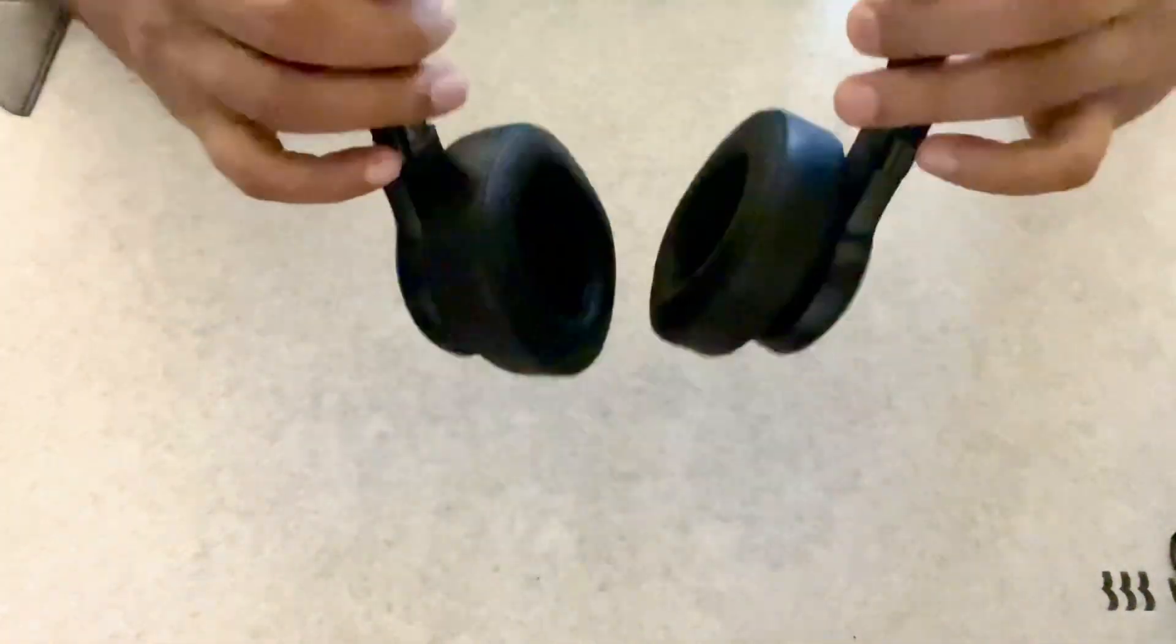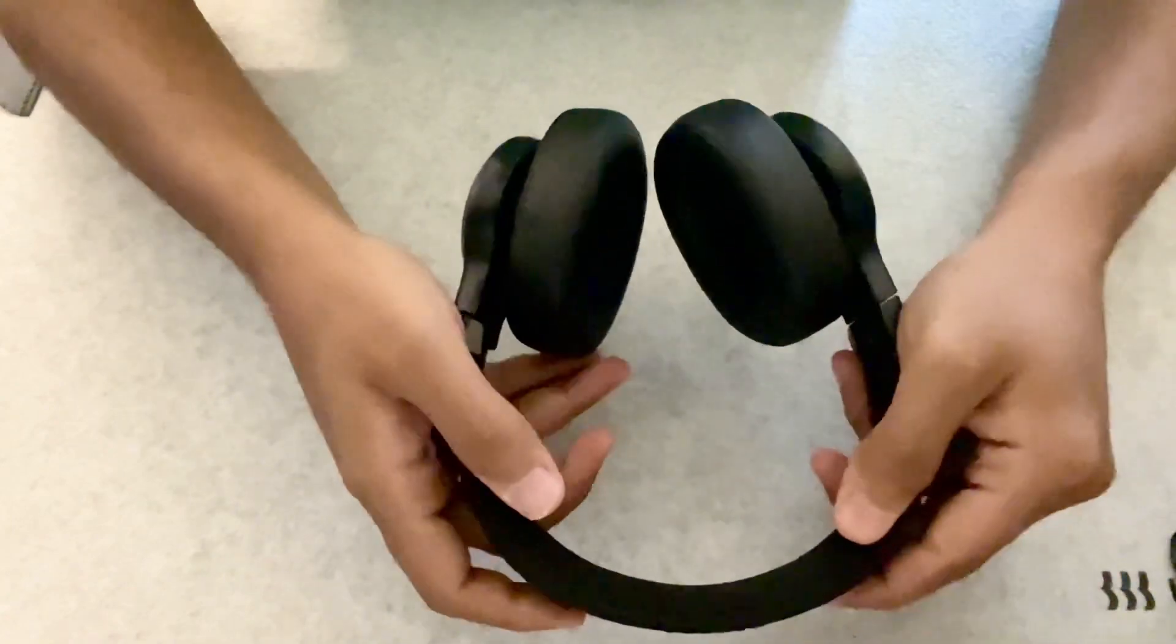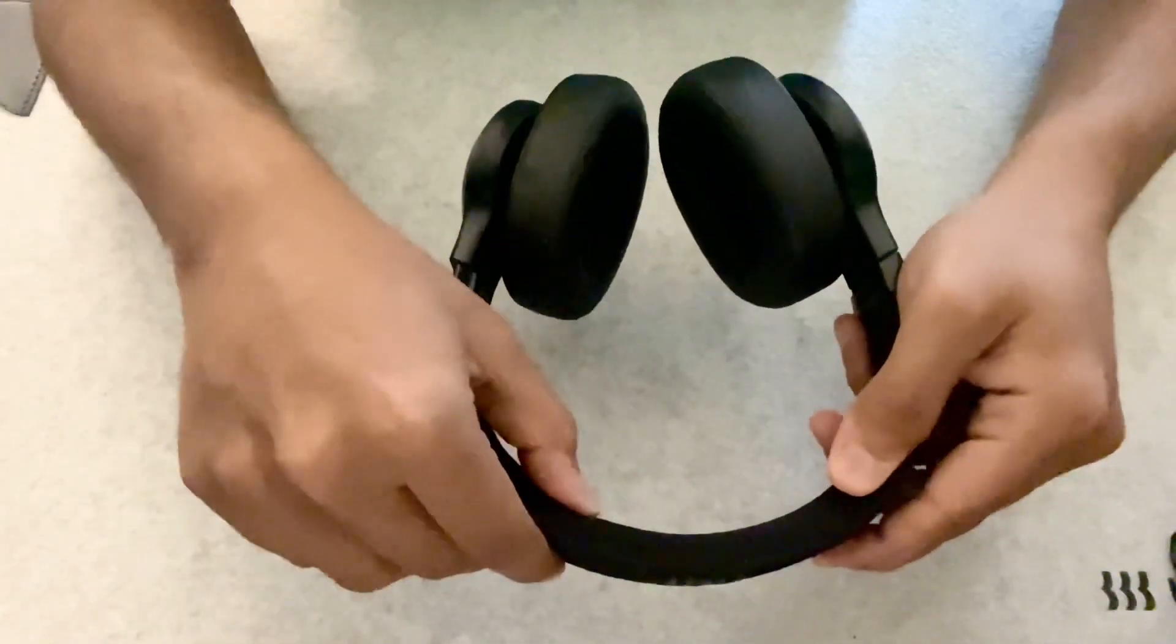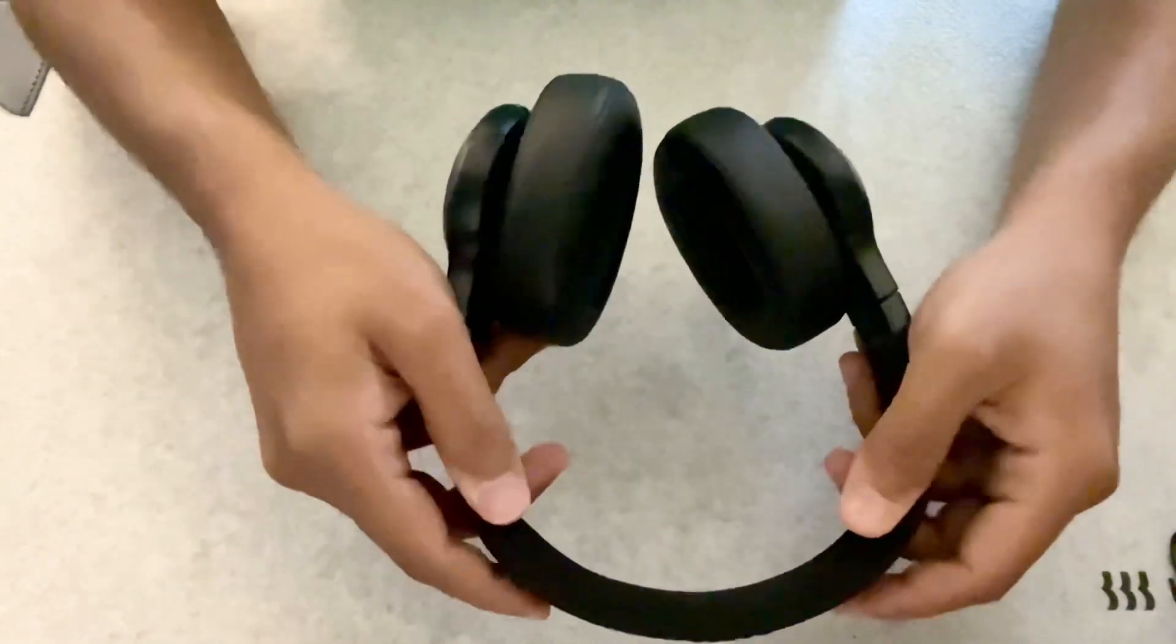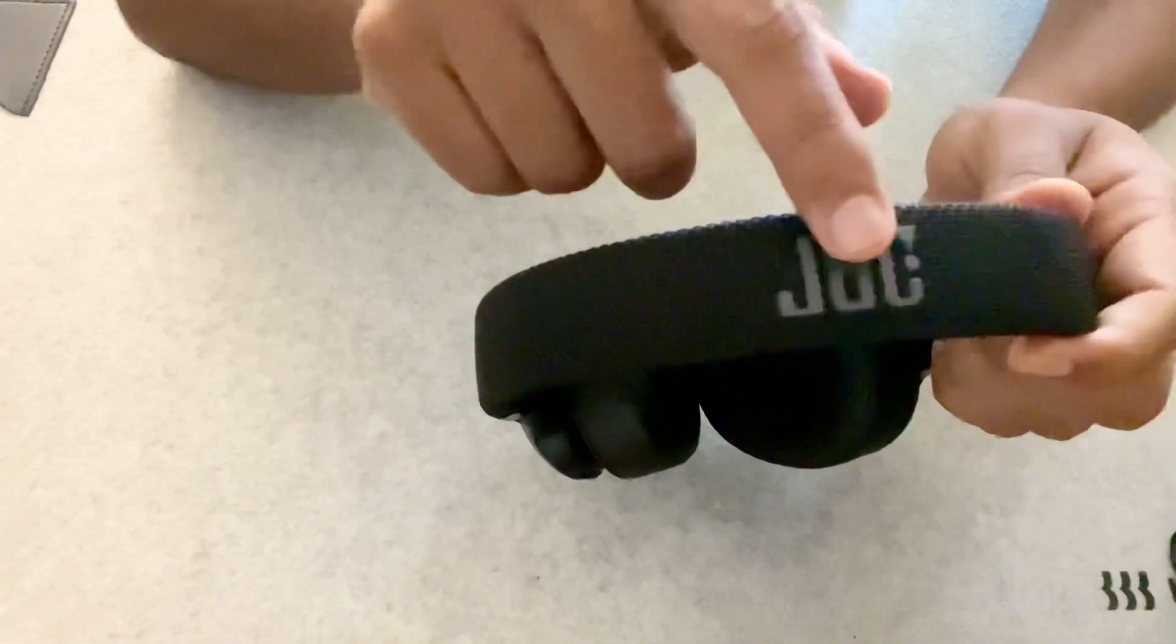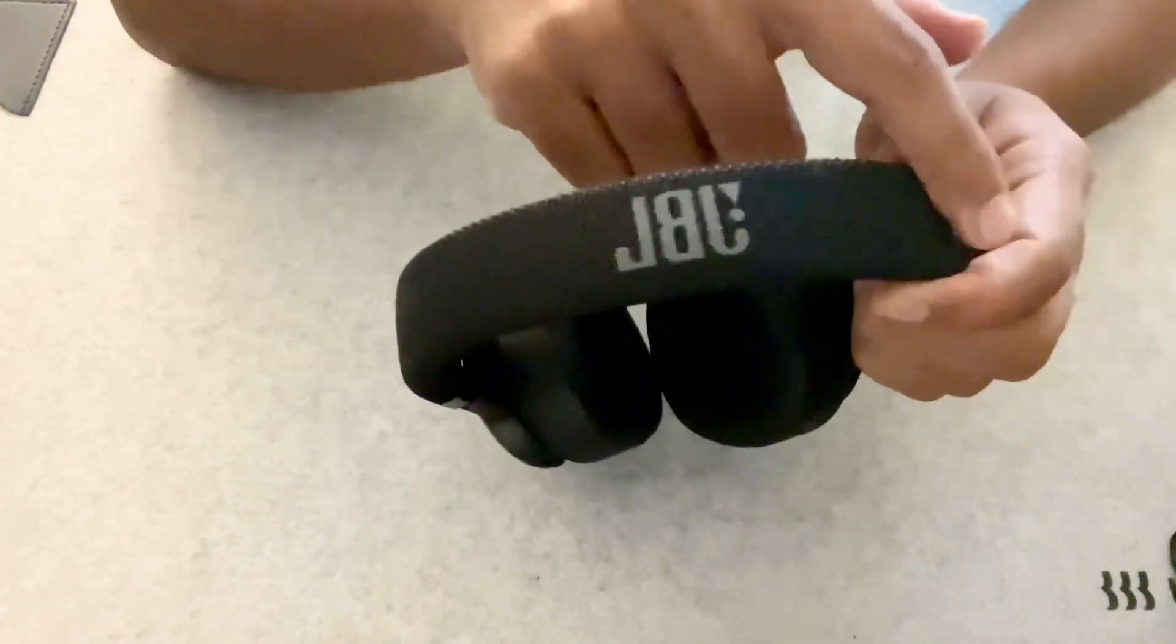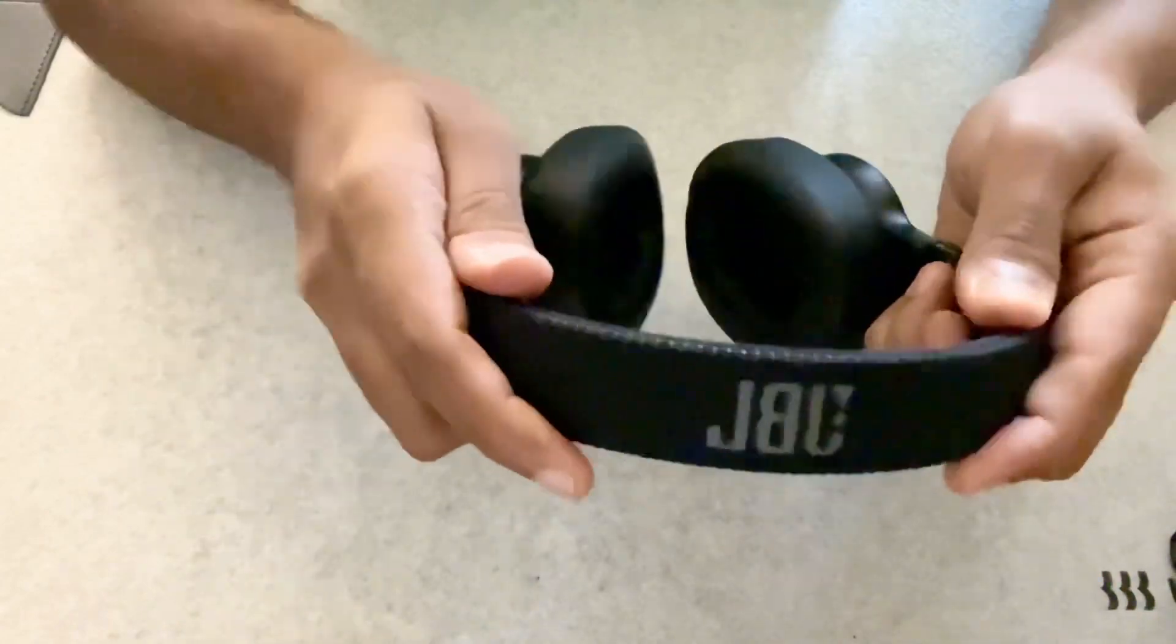So if you see the design, there's a metal band which is inside and then covered with a cushion, and then it's a fabric finish. At the top you will see the regular JBL branding and it still has a little bit of that fabric finish on the top as well. It feels really solid and rugged.